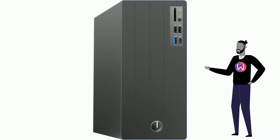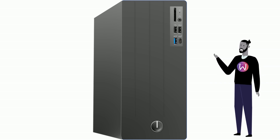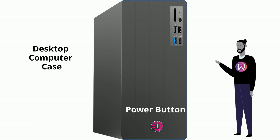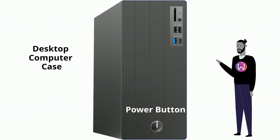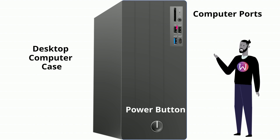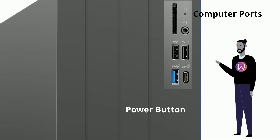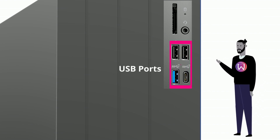This is called the case. It's the usually metal box that holds all of the other computer components. Both the laptop and desktop have a power button. It will also have a number of spots called ports where you can plug additional components in. These are called USB ports. USB stands for Universal Serial Bus, but is always spoken as USB. There are many types of USB ports.